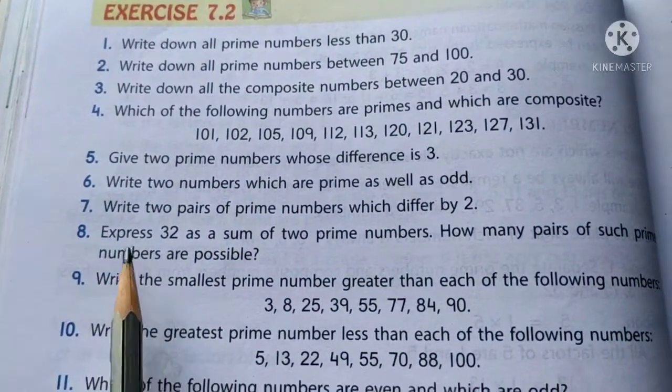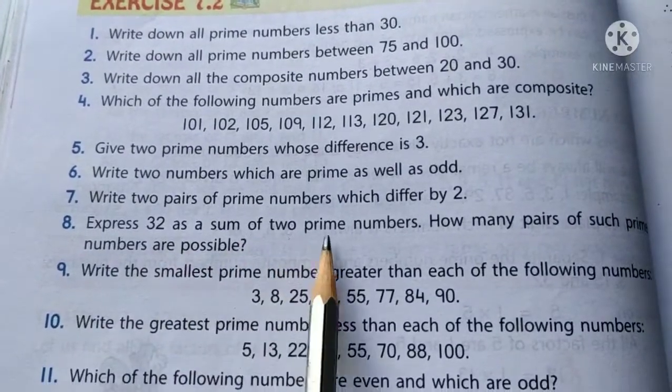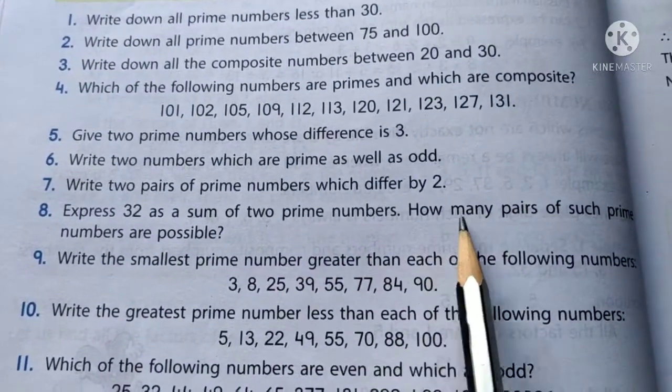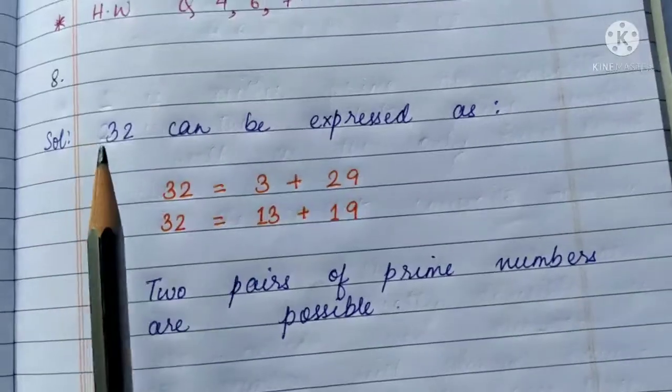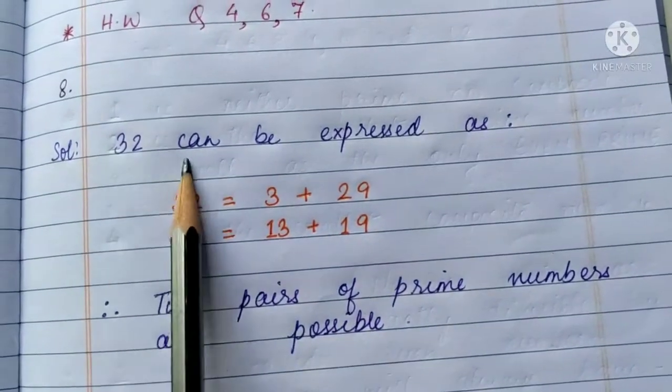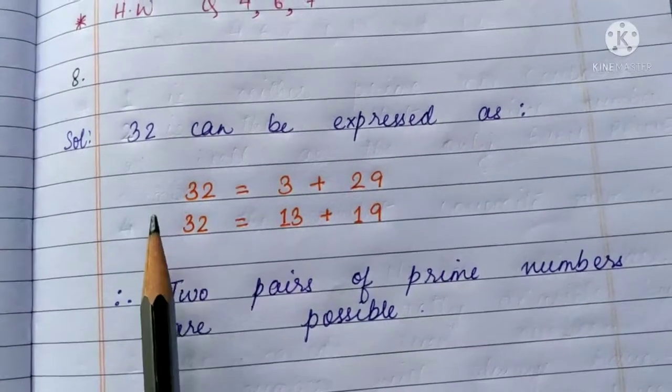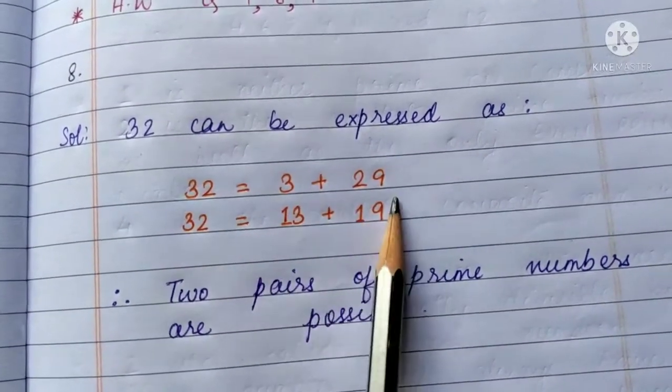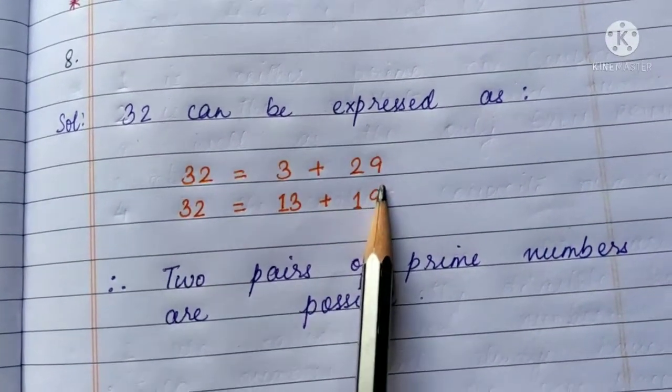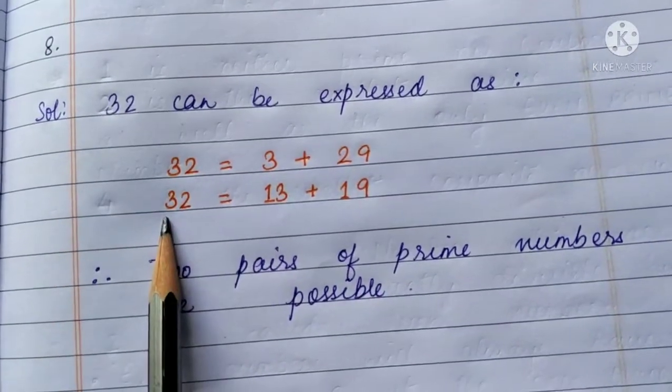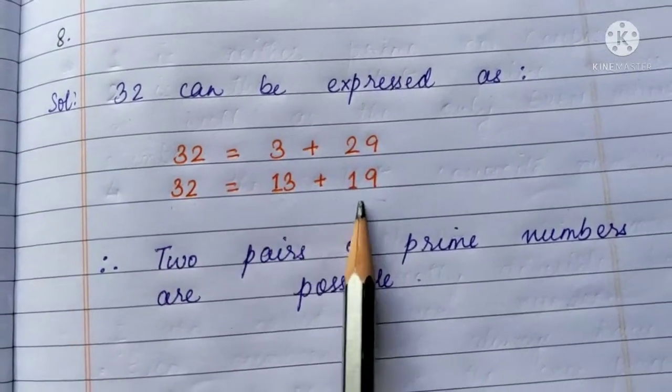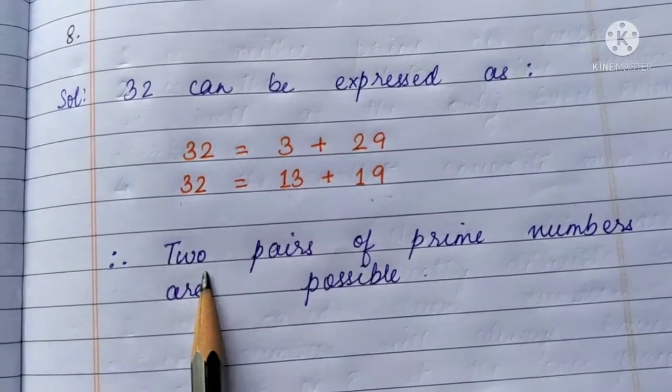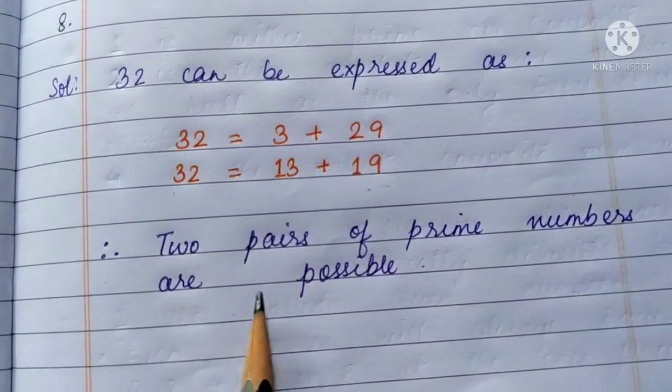Question 8. Express 32 as a sum of two prime numbers. How many pairs of such prime numbers are possible? 32 can be expressed as 32 equals to 3 plus 29 where both 3 and 29 are prime numbers. Also 32 can be expressed as a sum of 13 and 19. Both these numbers are prime numbers. Therefore, two pairs of prime numbers are possible.